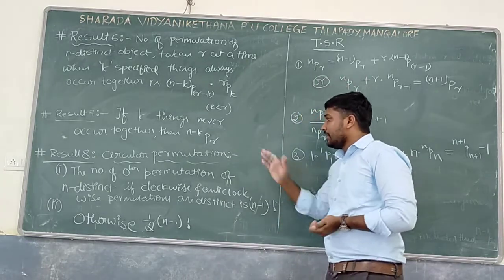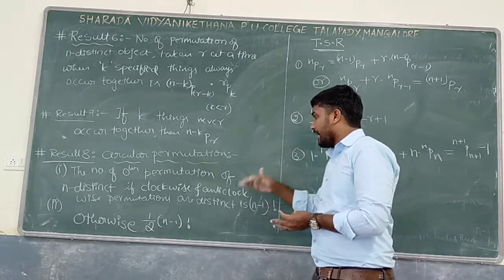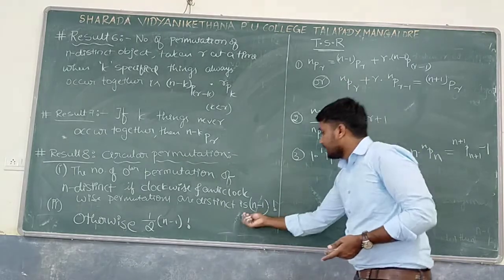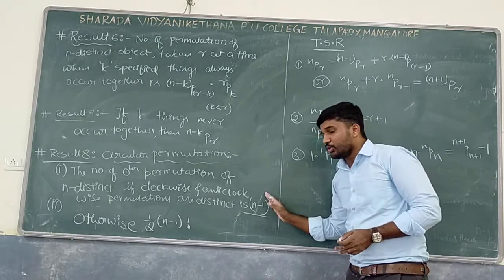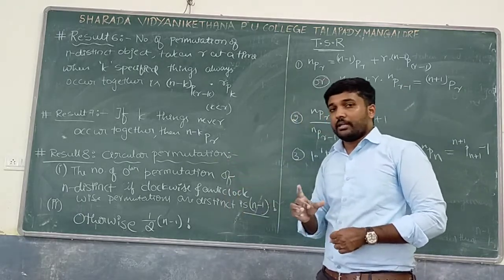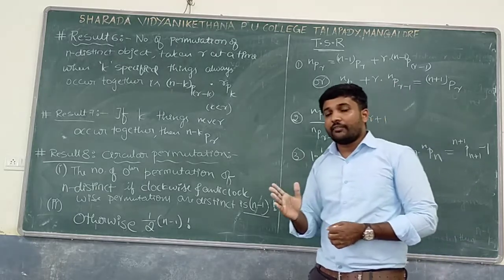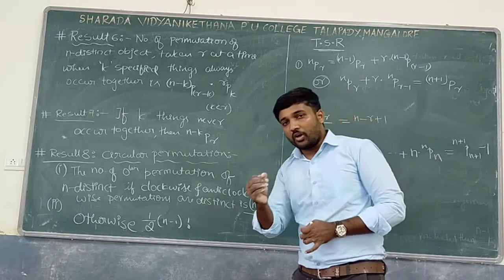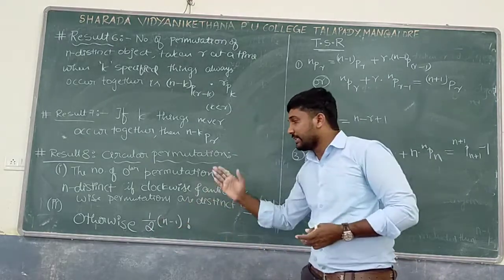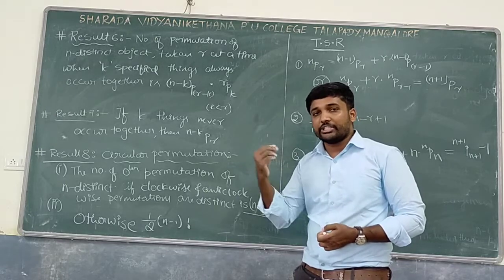Result 8 is about circular permutation. Two cases: Case 1 — if the clockwise and anti-clockwise permutations are distinct, then the number of circular permutations of n distinct objects is (n−1)!. This is used to find arrangements of students around a round table. Case 2 — if we cannot identify whether objects are arranged clockwise or anti-clockwise, the permutation is (1/2) × (n−1)!. This is used for beads in a necklace or garland.